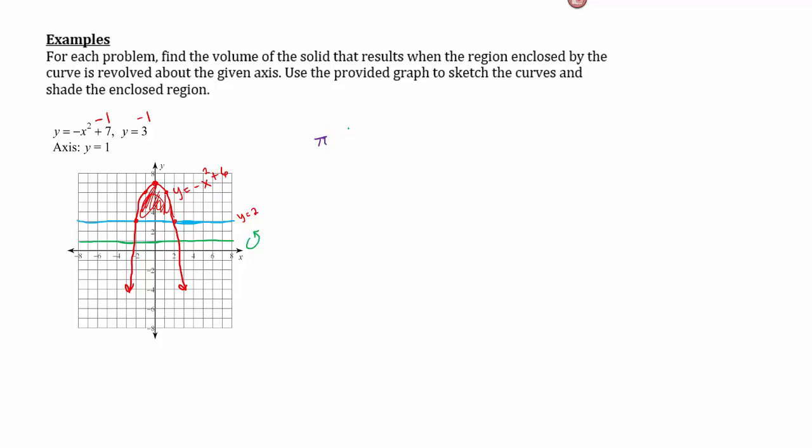So this is pi. Our boundaries are negative two and positive two. Our function that is farther from our axis of rotation is the parabola. So negative x squared plus seven will go first, don't forget to square it. Minus our line, not seven, six. Remember we adjusted it. So negative x squared plus six squared. And then minus our line after we've adjusted it, which is two. So we'll do two squared.